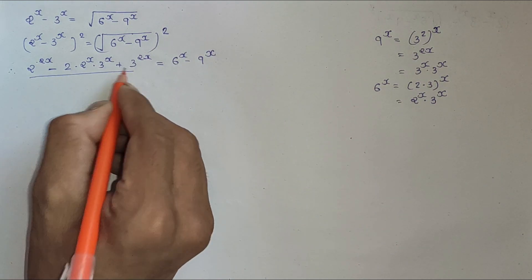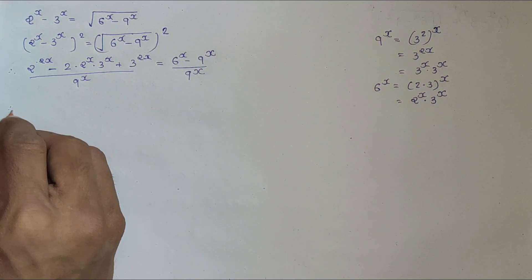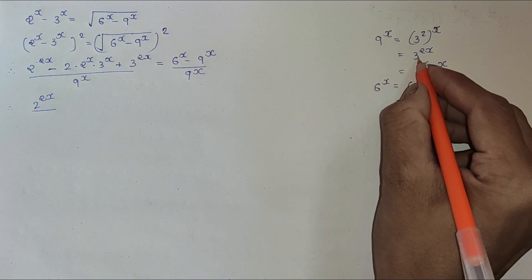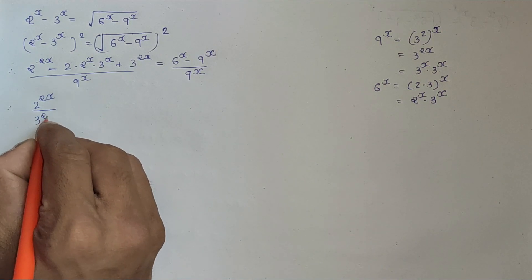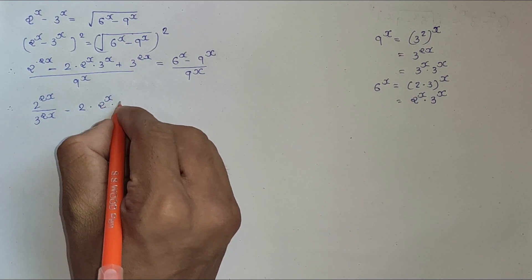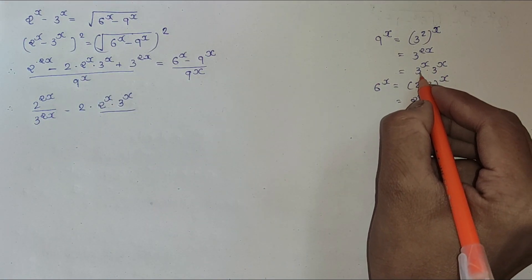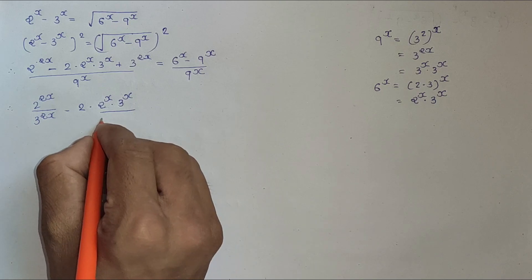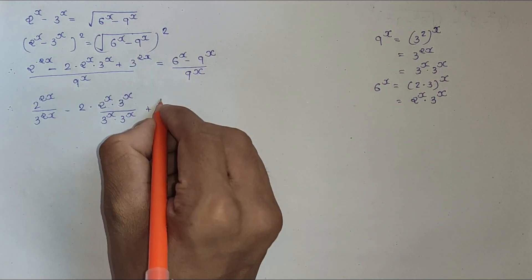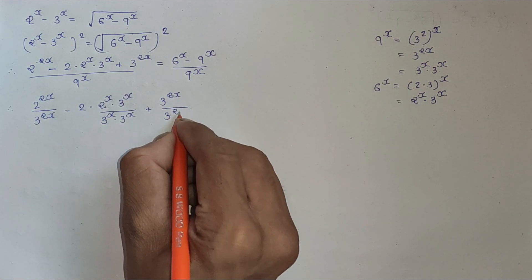Now let me divide both sides by 9 to the x. We have 2 to the 2x minus 2 times 2 to the x times 3 to the x divided by 9 to the x — which is 3 to the x times 3 to the x — plus 3 to the 2x divided by 9 to the x, which is 3 to the 2x.